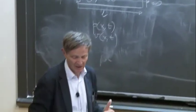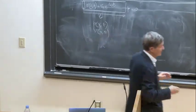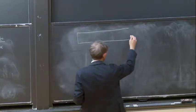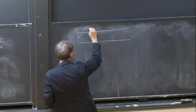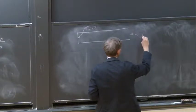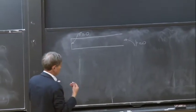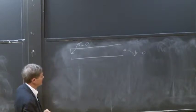Now consider a second problem: a duct where we would like to know the normal modes. Assume we have a duct that is closed on one side and open on the other. At the closed end, the normal velocity is zero. At the open end, the pressure is zero. What are the solutions of the 1D wave equation satisfying these boundary conditions?